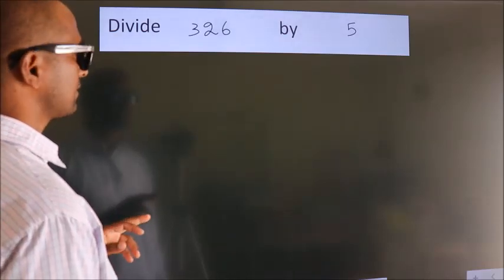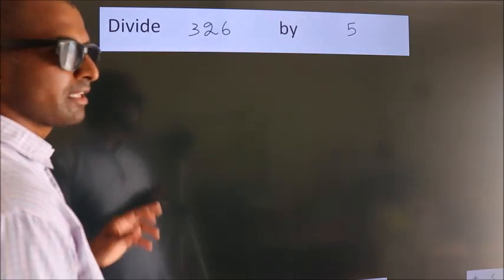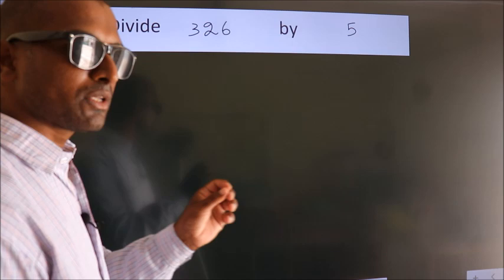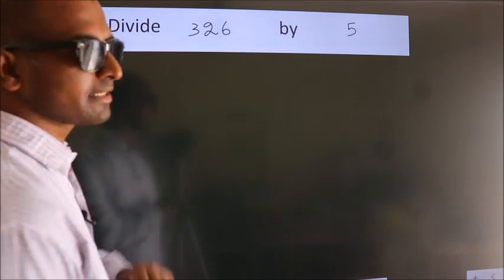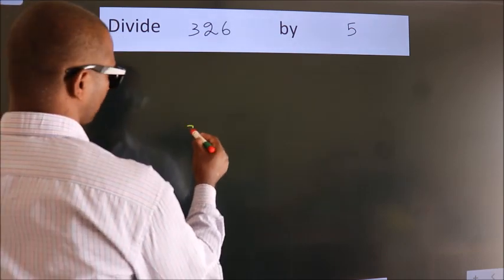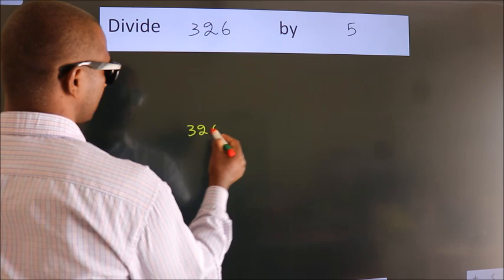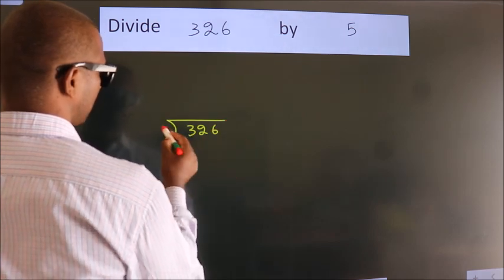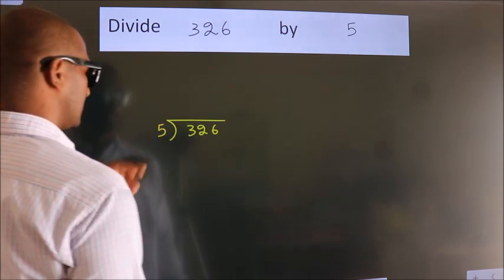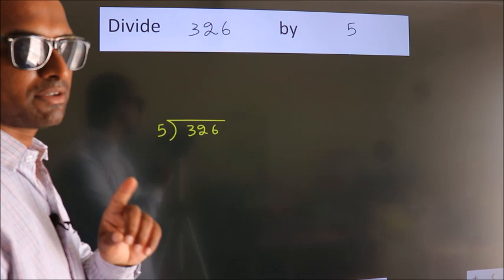Divide 326 by 5. To do this division, we should frame it in this way: 326 here, 5 here. This is your step 1.